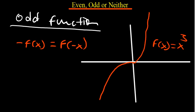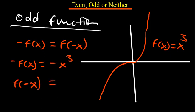We can verify this for f(x) = x³: -f(x) = -x³, and f(-x) = (-x)³ = -x³. Since these are equal, this confirms the function is odd. There are also functions that don't satisfy either condition — those are neither even nor odd.